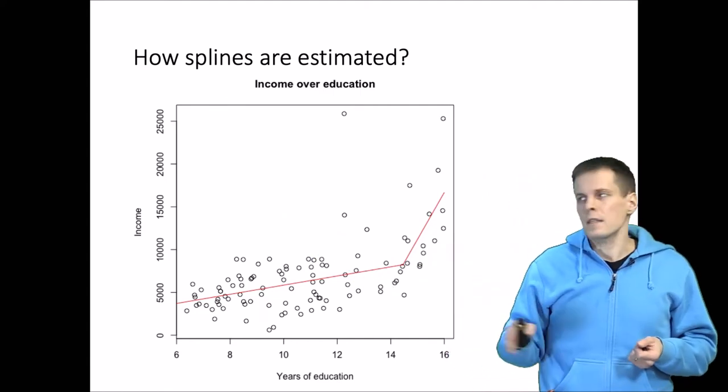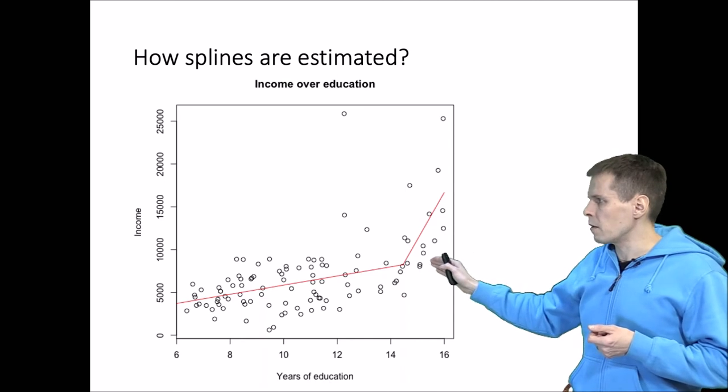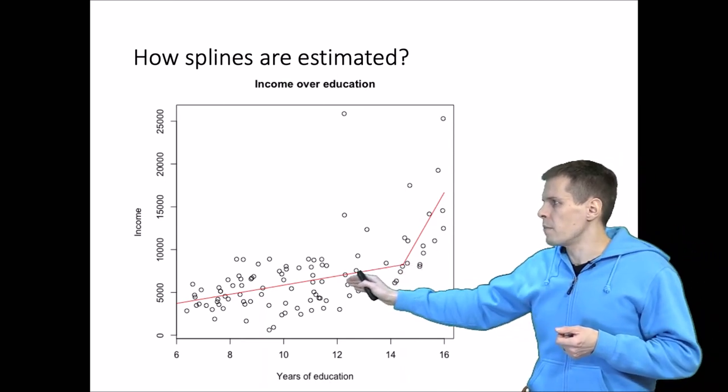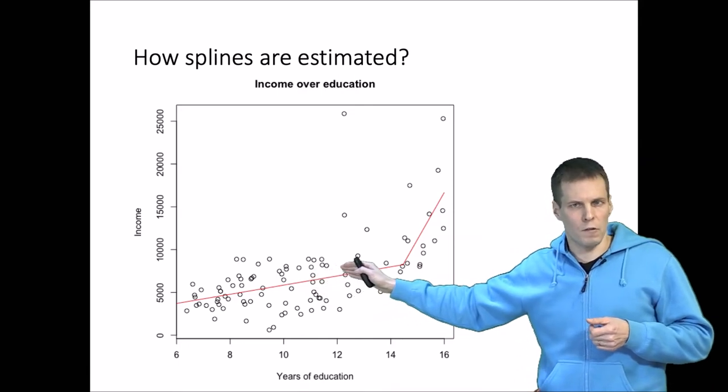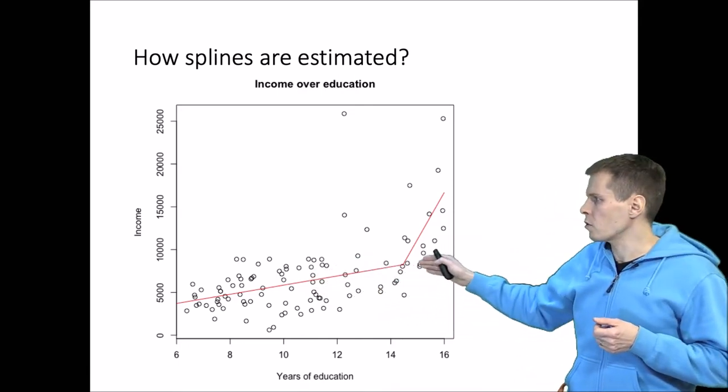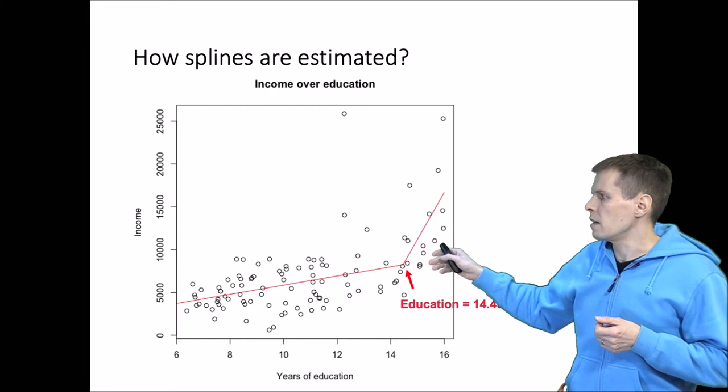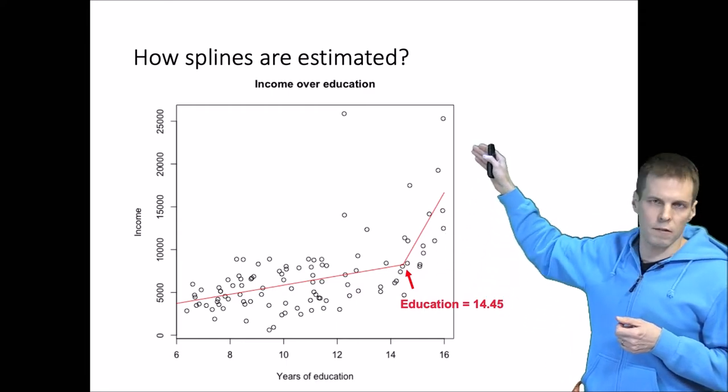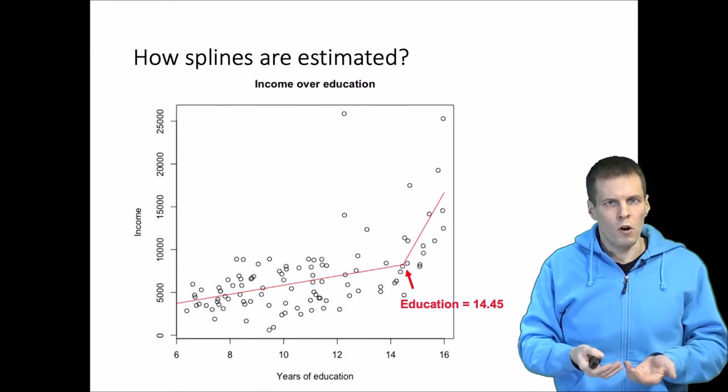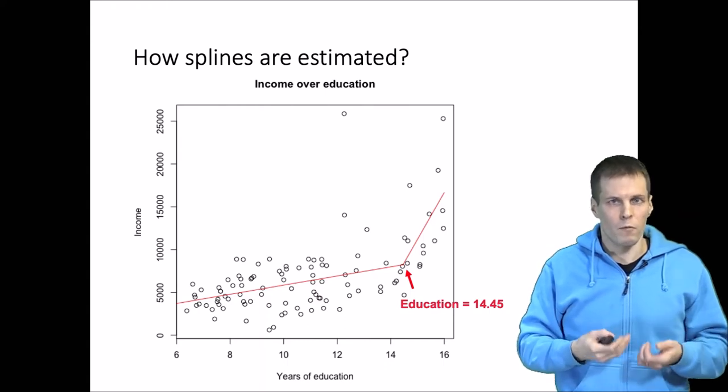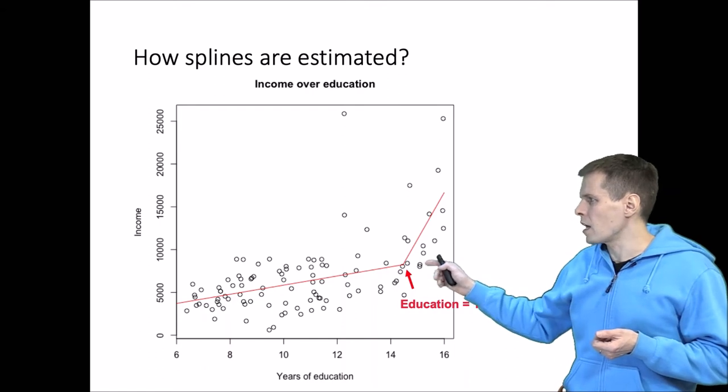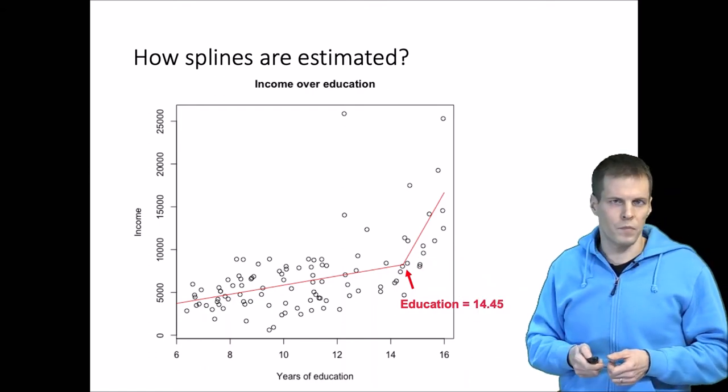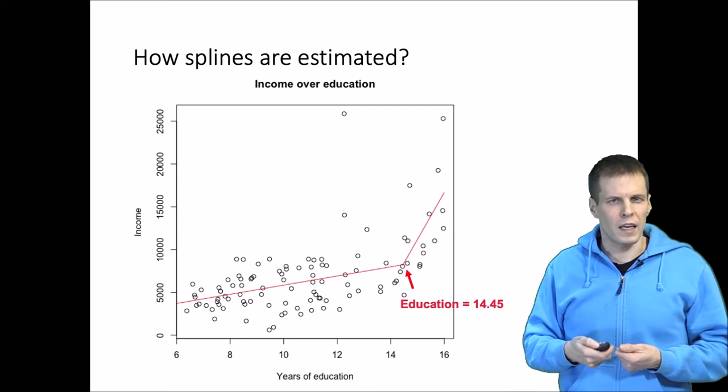And we can see that when we fit a spline, the best fitting spline shows that the increase in education and income is rather gradual until about 14.45 years and then it starts to increase rapidly. So education pays off and college education even more so. So how is this kind of a line with one knot estimated?